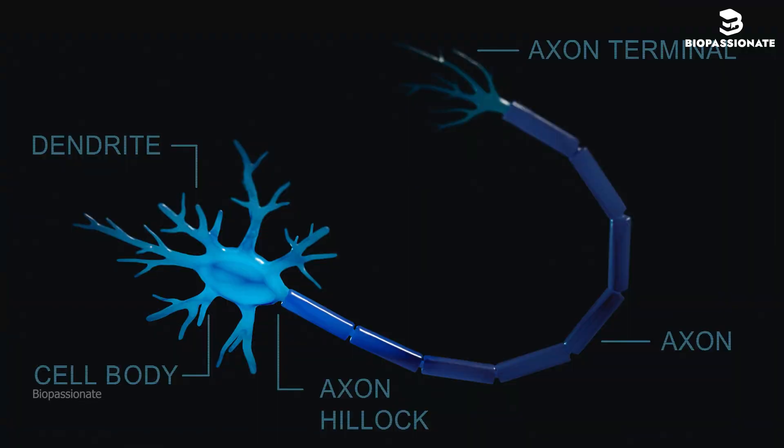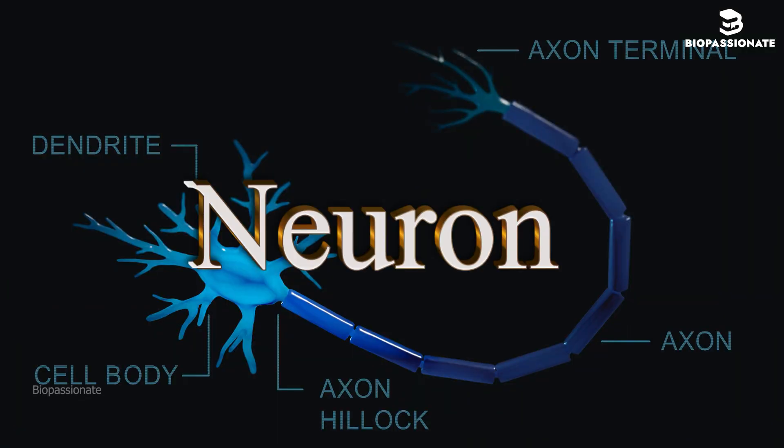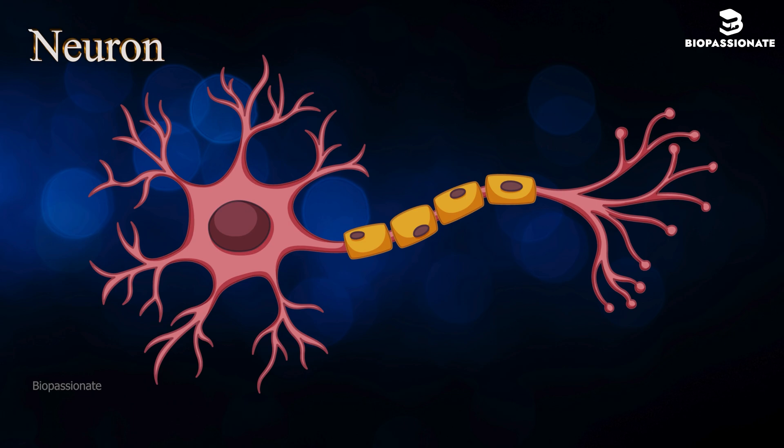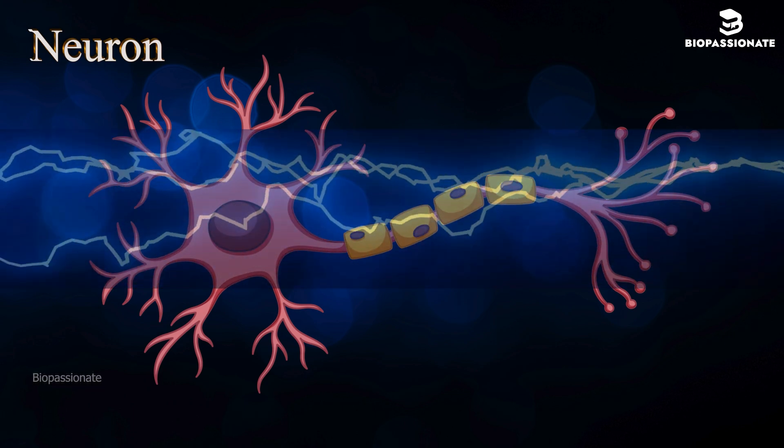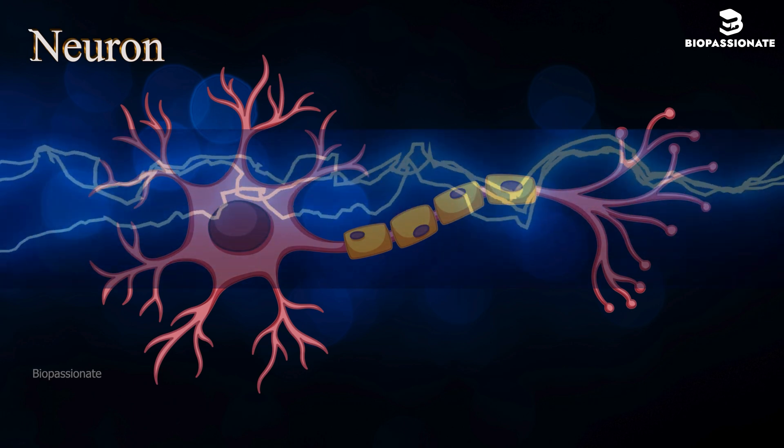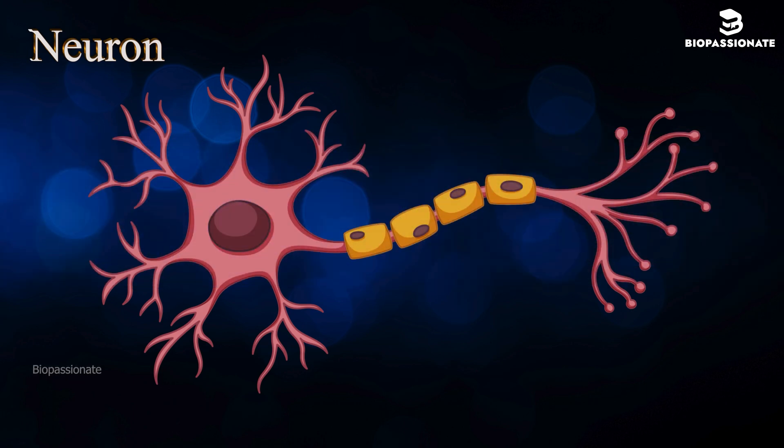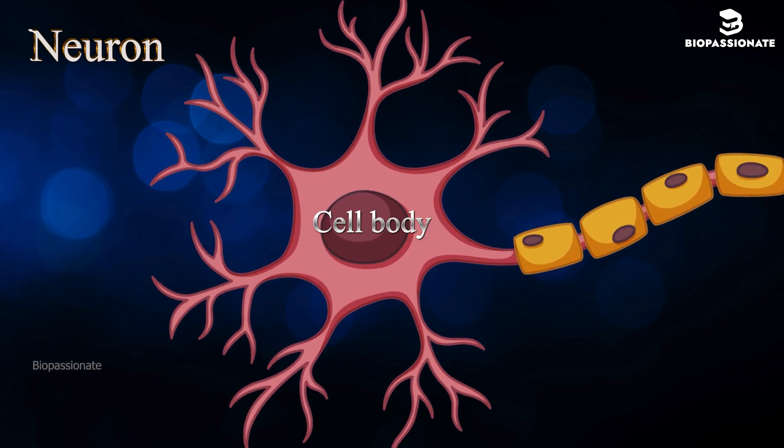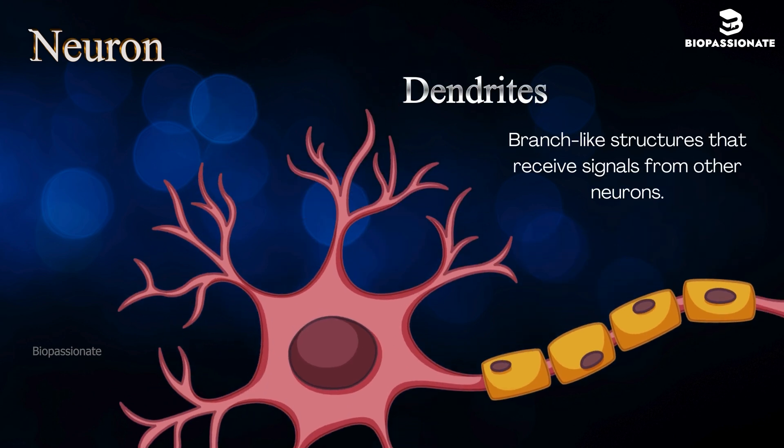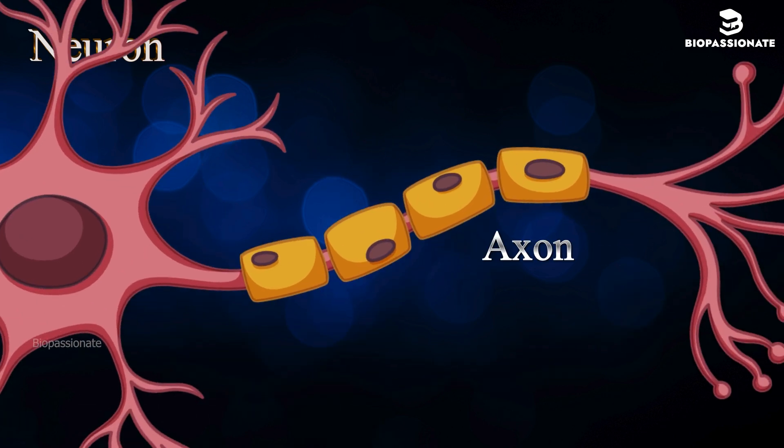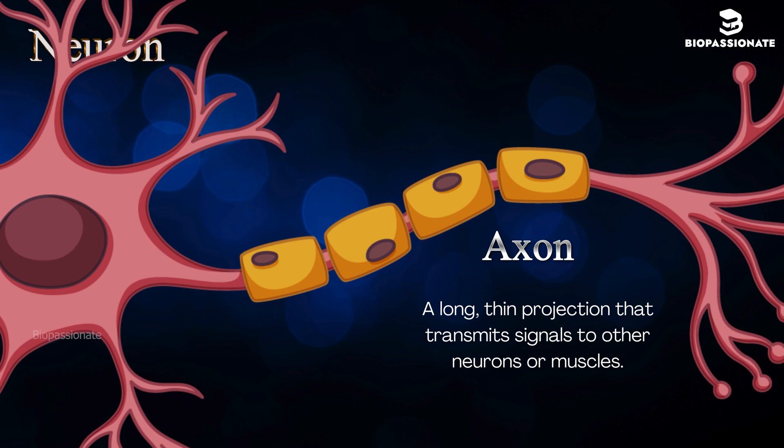Let's begin by getting to know the main player, the neuron. A neuron is a specialized cell responsible for transmitting nerve impulses, also called action potentials. A neuron has three main parts: cell body or soma, the control center where the cell's nucleus is located; dendrites, branch-like structures that receive signals from other neurons; and the axon, a long, thin projection that transmits signals to other neurons or muscles.